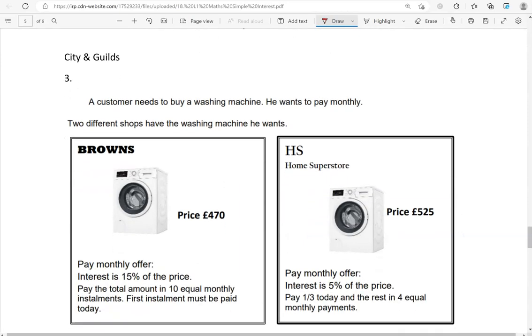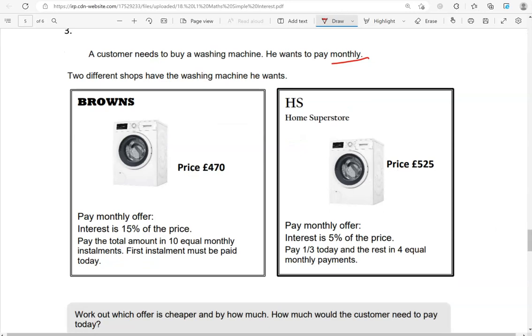A customer needs to buy a washing machine. He wants to pay monthly. Two different shops have the washing machine he wants. Browns with a price of 470 pounds. Pay monthly offer: Interest is 15% of the price. Pay the total amount in 10 equal monthly installments. First installment must be paid today. Then we have HS home superstore. Price, 525 pounds. Pay monthly offer: Interest is 5% of the price. Pay one third today and the rest in four equal monthly payments.